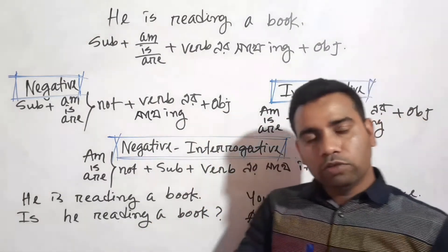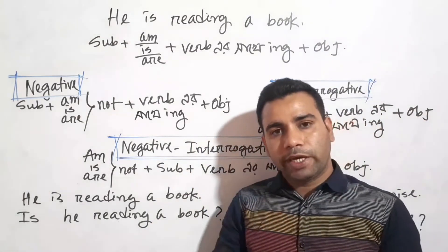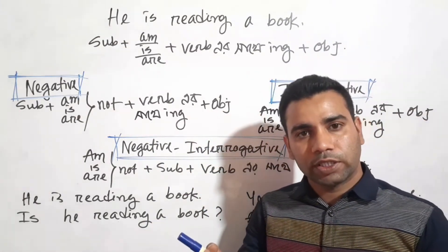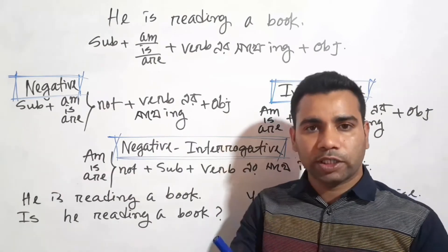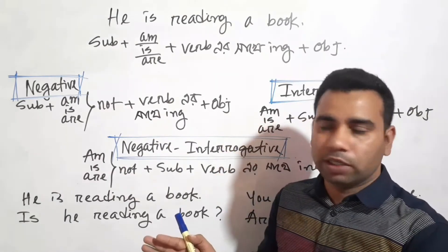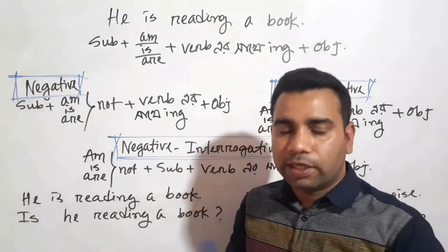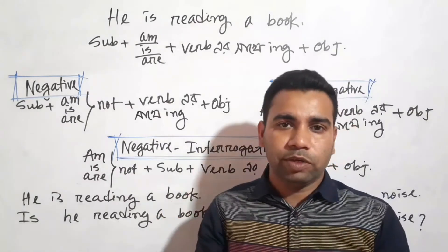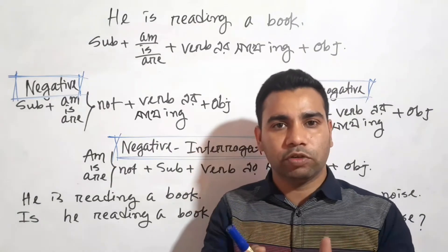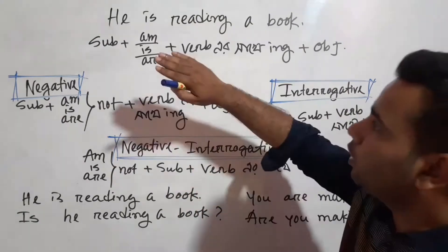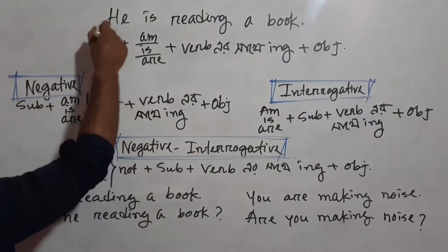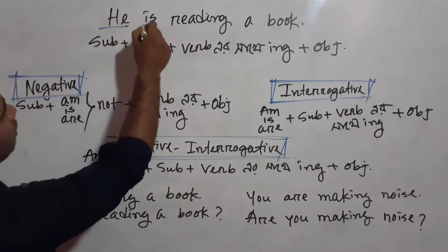In this class, you will see how the present continuous tense is used in negative and interrogative forms. You will know how the negative and interrogative are formed. For example: 'He is reading a book.' This has a Subject, Auxiliary, Verb+ING, and Object — this is the structure of the present continuous tense.